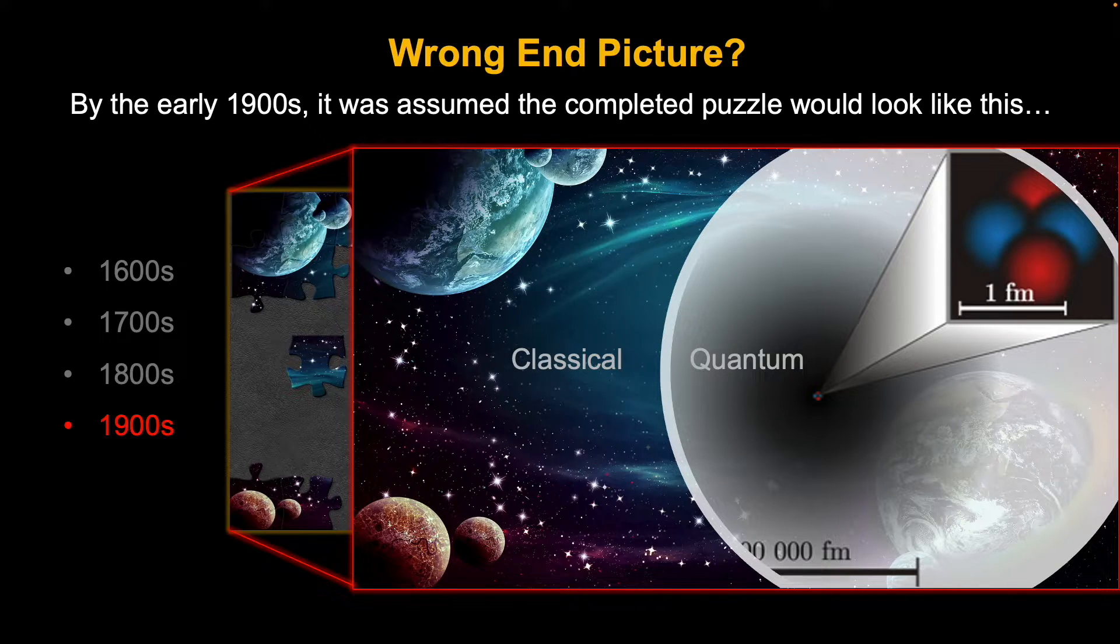So before all the clues and more puzzle pieces were even found. Some of the new puzzle pieces that would be found after would have to be modified to fit into this picture of the puzzle, and some were actually discarded. The end picture that physics is working towards now has two laws of physics depending on size, classical mechanics and quantum mechanics.